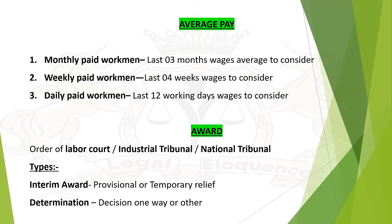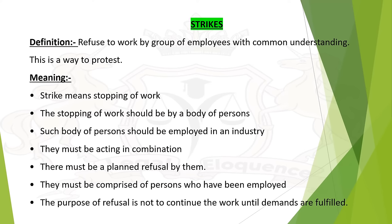Award: The orders of the Labor Court, Industrial Tribunal, and National Tribunal are called Awards. There are two types: Interim Award and Determination. Interim Award is provisional or temporary relief given — that is called Interim Award. Determination is a decision one way or the other, i.e., giving a decision in favor of one party.